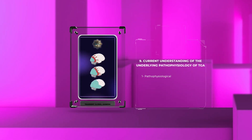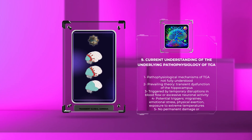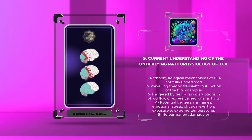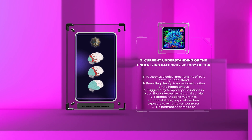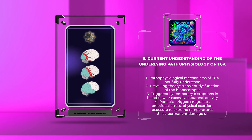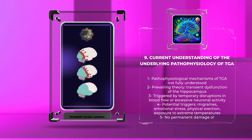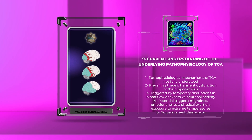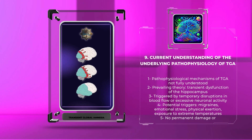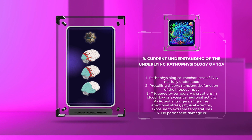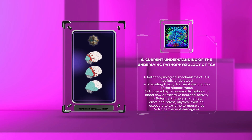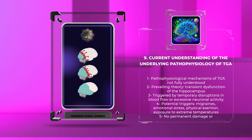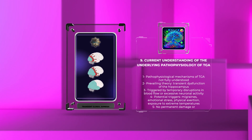Transient global amnesia is a neurological condition characterized by sudden and temporary memory loss. While the precise underlying pathophysiological mechanisms of TGA are not yet fully understood, ongoing studies have shed some light on its potential causes. One prevailing theory suggests that TGA may arise from a transient dysfunction of the hippocampus, a crucial brain region involved in memory formation and retrieval. This dysfunction could stem from temporary disruptions in blood flow to the hippocampus or temporary excessive excitability of its neurons. It is worth noting that the dysfunction in the hippocampus during a TGA episode is strictly transient, with no permanent damage observed. This reversibility has contributed to the understanding that TGA is not associated with neurodegenerative changes or significant structural brain abnormalities.